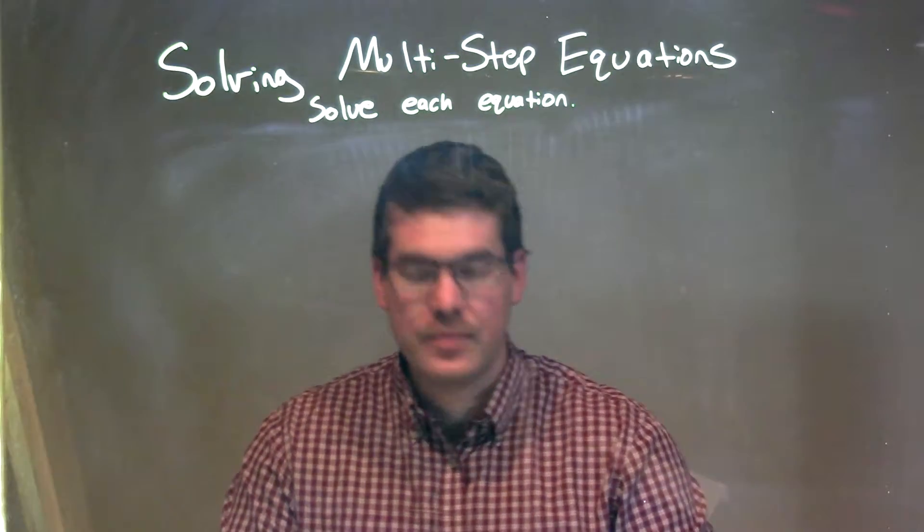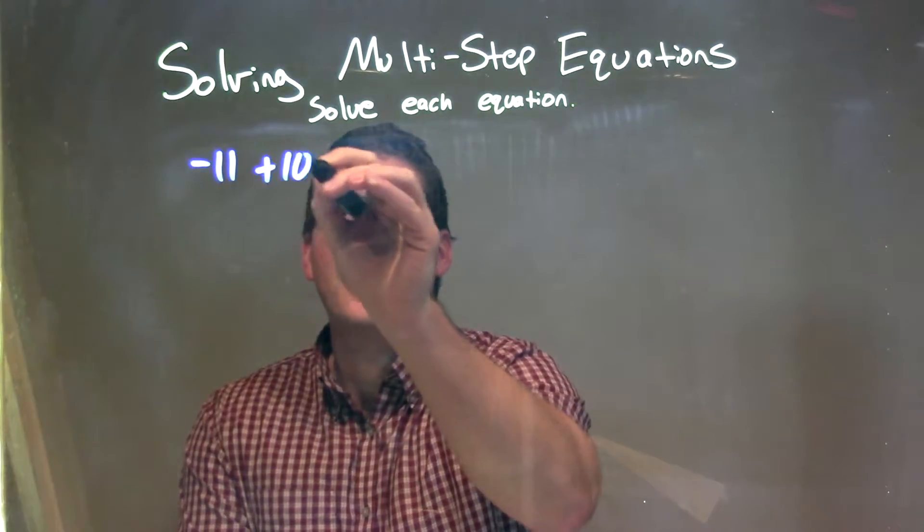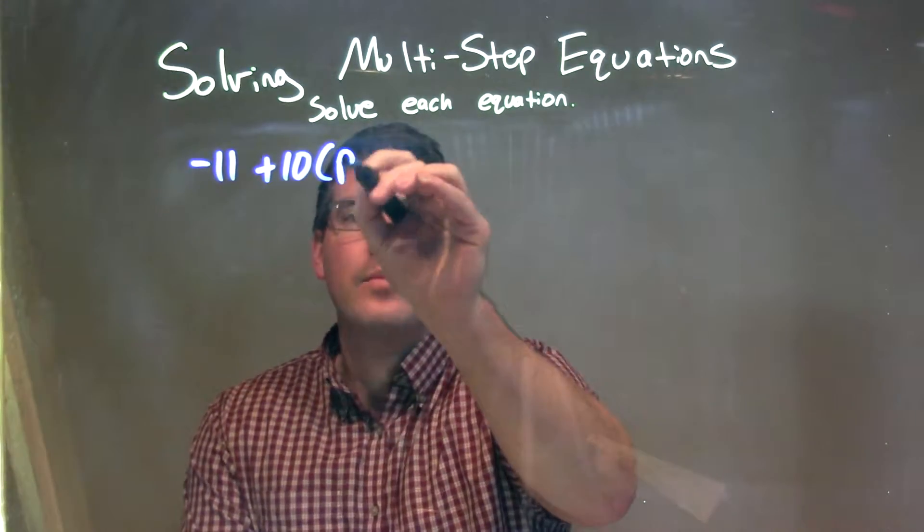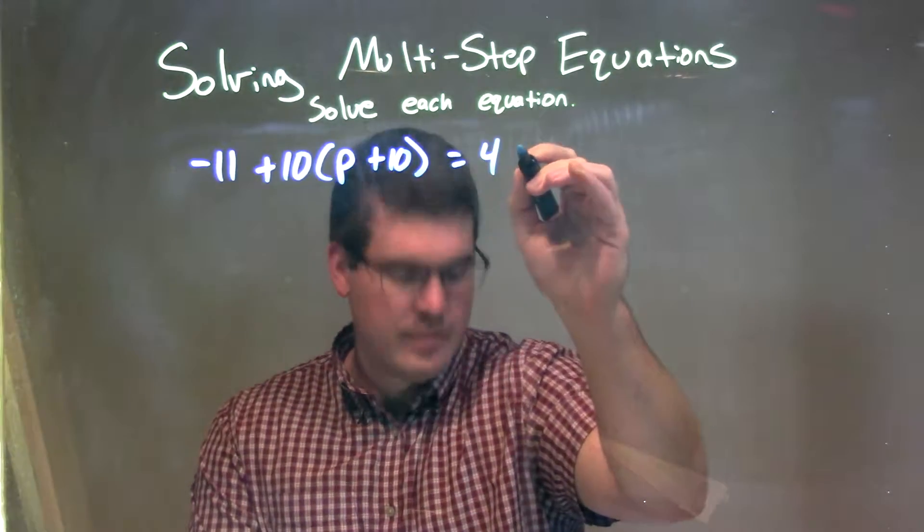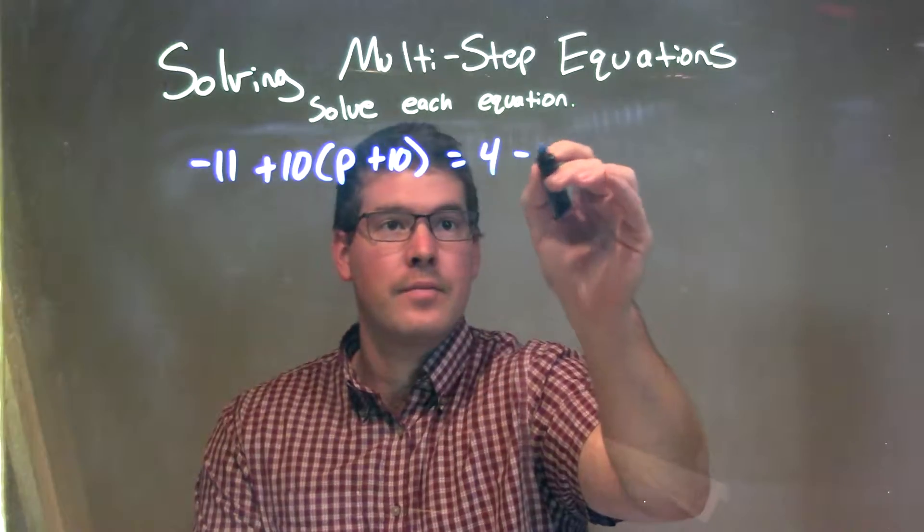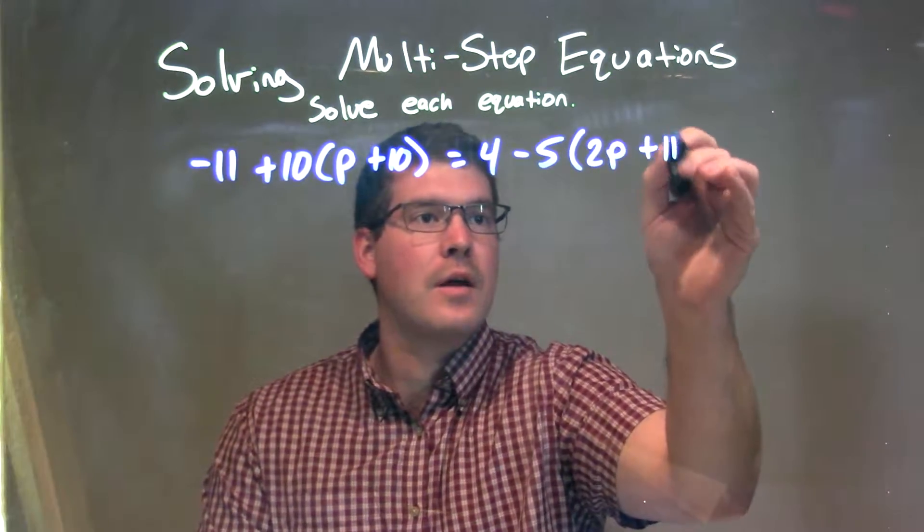I was given this equation: negative 11 plus 10 times (p plus 10) equals 4 minus 5 times (2p plus 11).